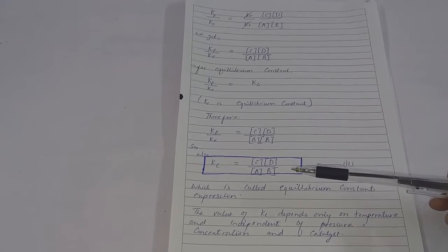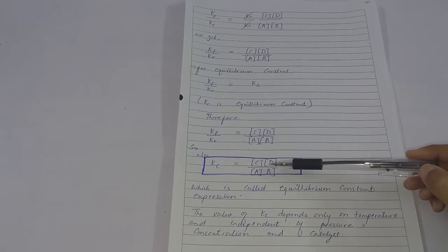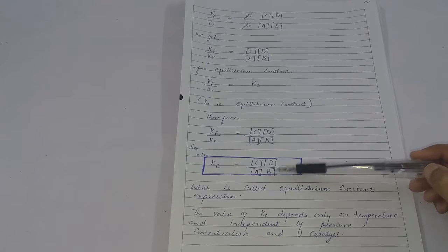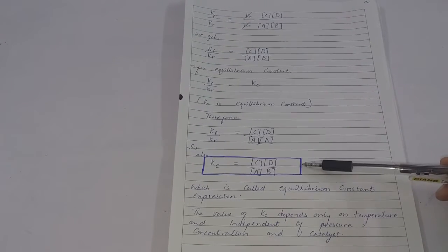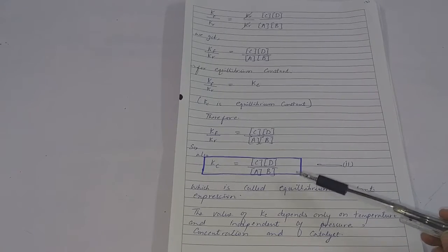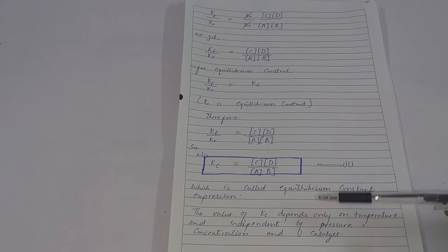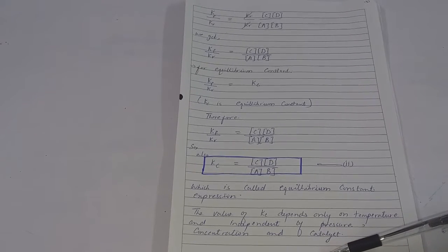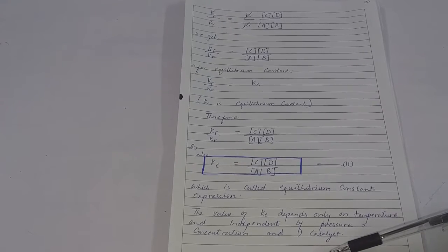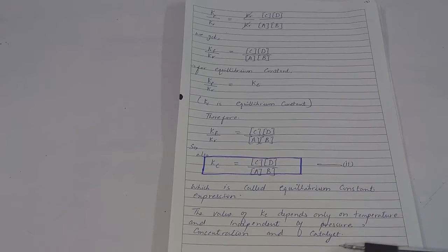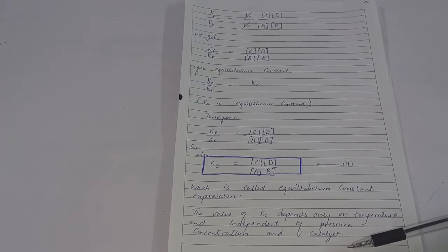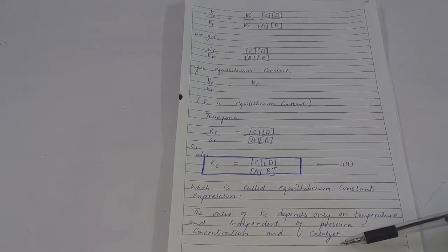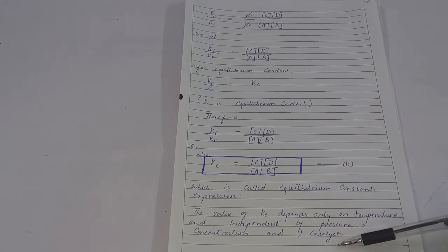The value of KC depends on temperature, but it is independent of pressure, concentration, and catalyst. This means that if the temperature changes, KC's value will be affected. However, changes in pressure, concentration, or catalyst do not affect KC's value.